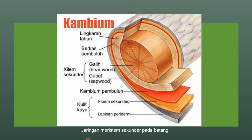Selanjutnya ada gambar jaringan meristem sekunder yang terdapat pada batang. Jika kalian perhatikan pada gambar ini, kalian akan melihat ada kambium yang terdapat pada gambar yang berwarna merah. Kambium ini merupakan jaringan meristem yang aktif membelah, yang menyebabkan batang menjadi bertambah besar. Jika suatu batang kayu kita perhatikan, maka batang kayu tersebut akan terlihat berlapis-lapis. Lapisan ini akan terlihat pada tumbuhan yang batangnya sudah sangat besar ukurannya. Aktivitas kambium inilah yang menyebabkan batang menjadi bertambah besar.